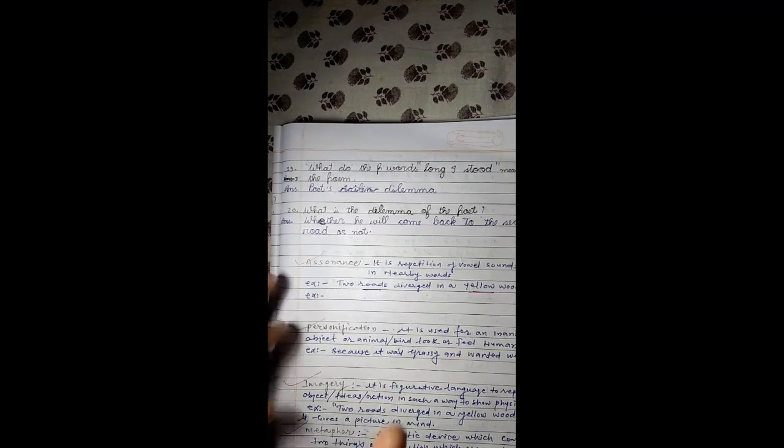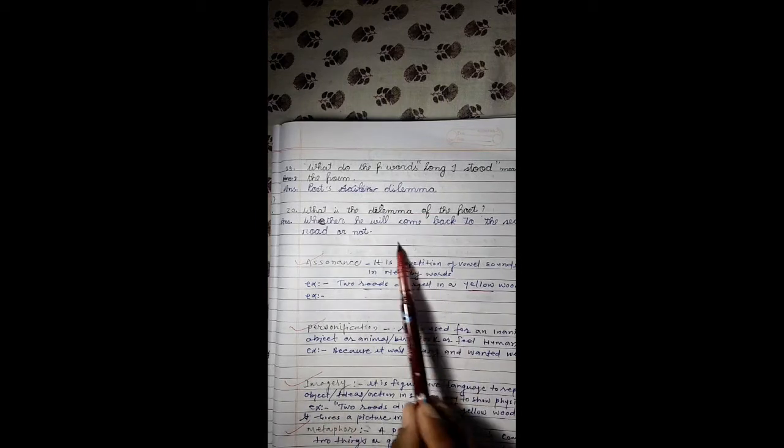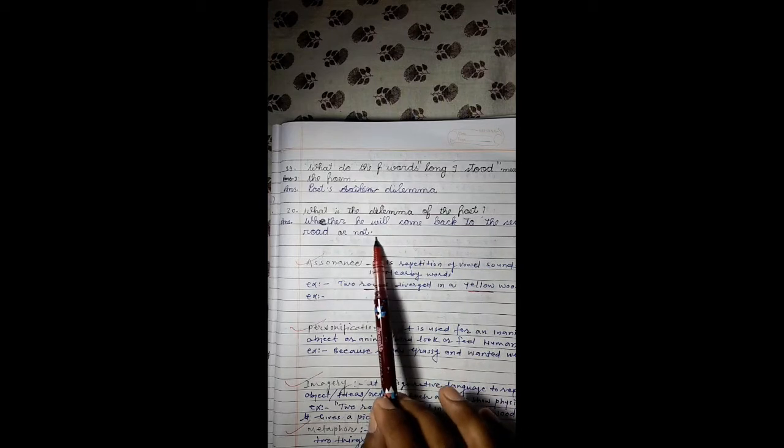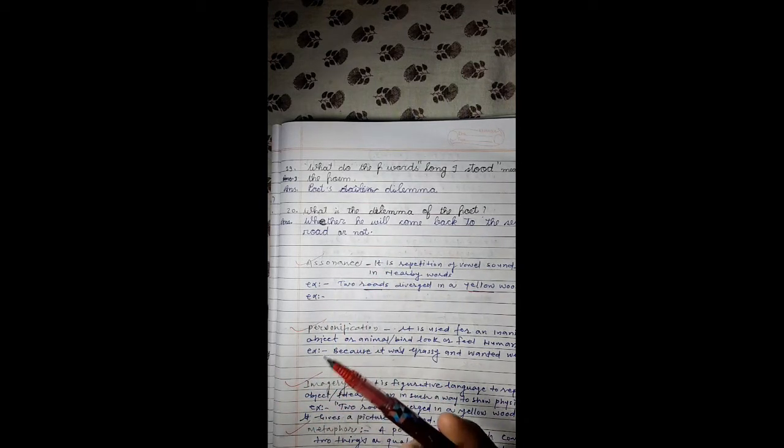What do the words 'long I stood' mean in the poem? It means the poet stood for a long time in this dilemma where two roads diverge in the woods, thinking on which path should I actually move. What is the dilemma of the poet? Whether he will come back to the second road or not. If he goes on one road and doesn't find it suitable, will he be able to return to the second road? No.